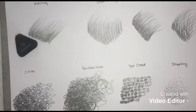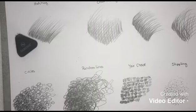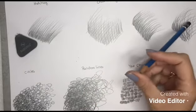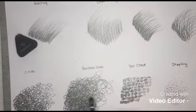Hey guys, today we're gonna start working a little bit with strokes, how we can do strokes with pencils. We have eight different kinds of strokes: hatching, cross hatching, contour, cross contour, circles, random lines, your choice, and stippling.